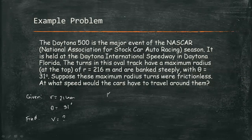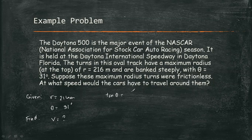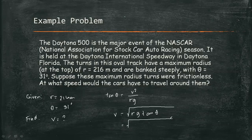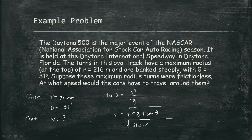Using this formula tan theta equals v² over rg, we can solve for velocity, which is equal now to the square root of radius times gravitational pull times the tangent theta. We have radius of 216 meters times gravitational pull of 9.81 meters per second squared times tangent 31 degrees.